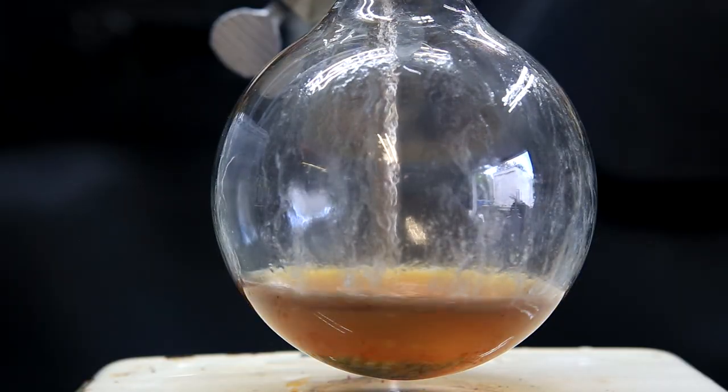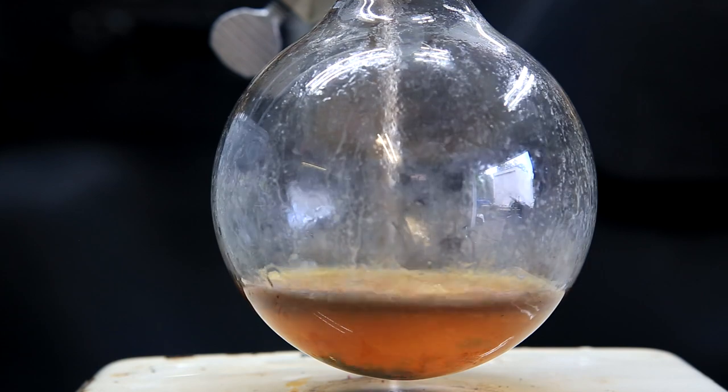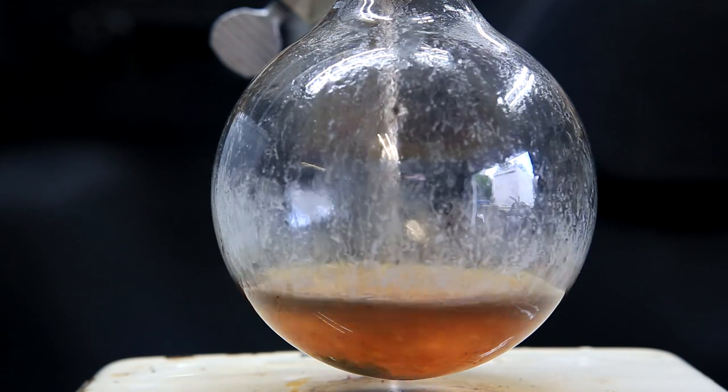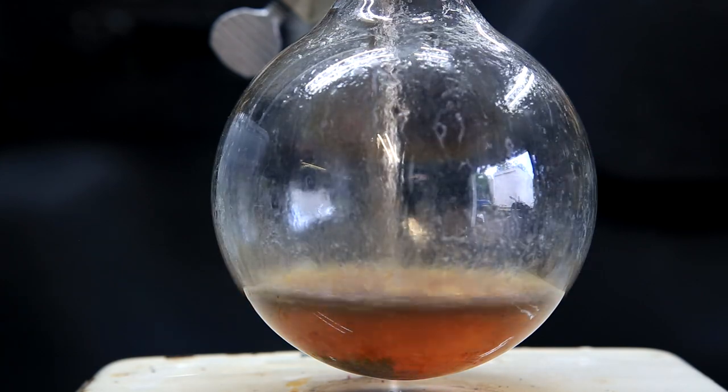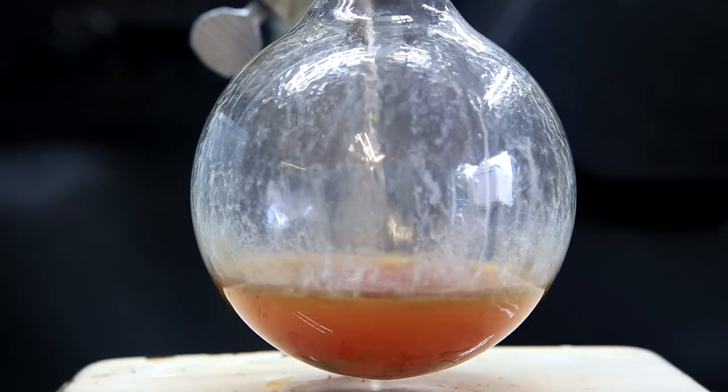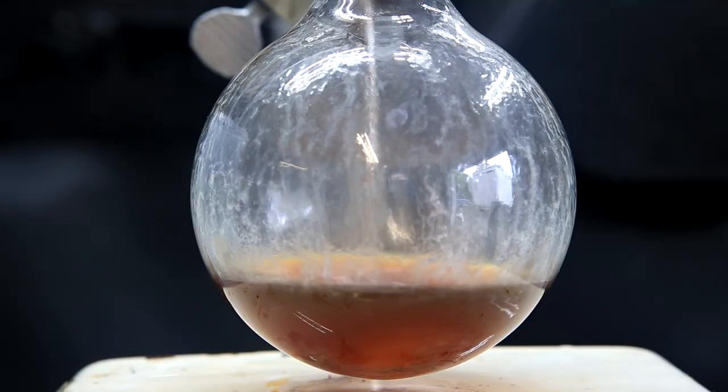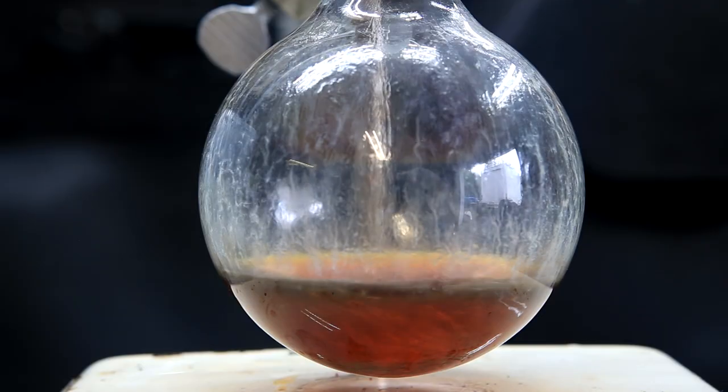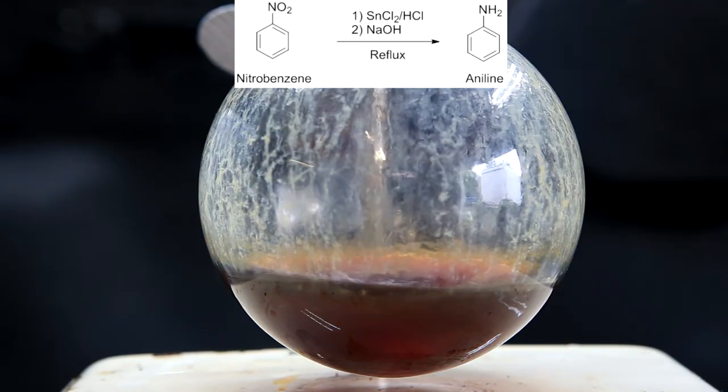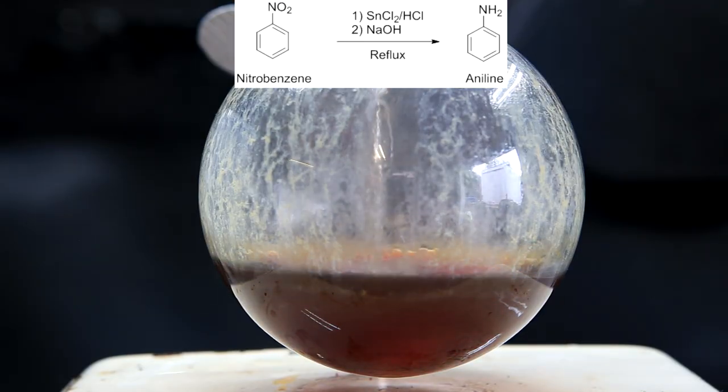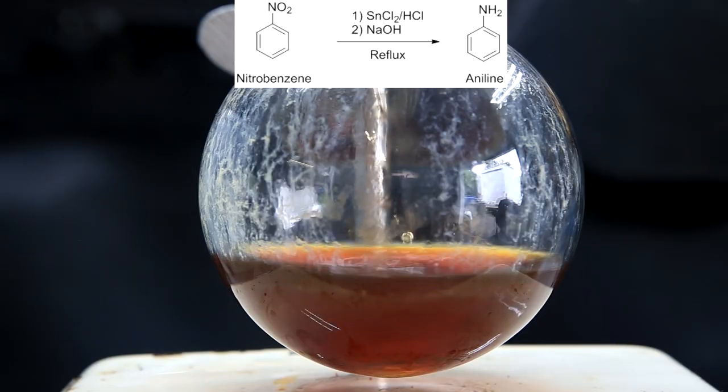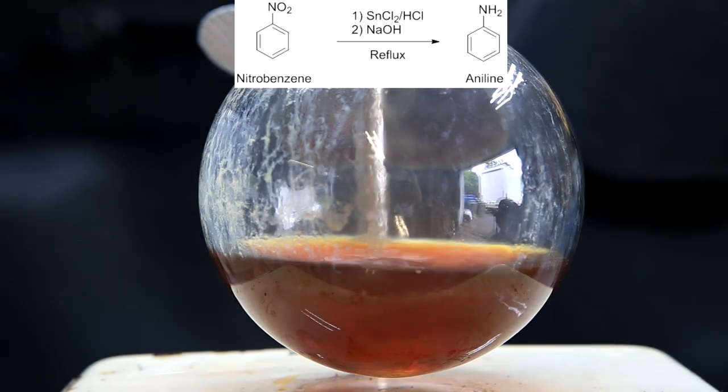Once the reaction seems to be dying down and become not as vigorous, 15 more milliliters of hydrochloric acid is added. This was done repeatedly until a total of 75 milliliters of hydrochloric acid was added. The reaction that is occurring is shown above. The hydrochloric acid reacts with the tin to produce tin chloride, which then reacts with the nitrobenzene to reduce it to aniline.